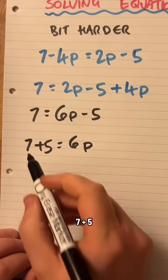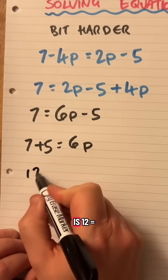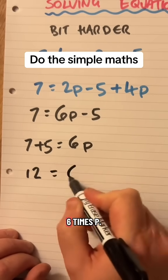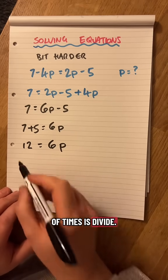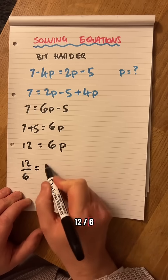7 plus 5 in my book from Cardigan School is 12 equals 6 times p. It's 6 times p, the opposite of times is divide.